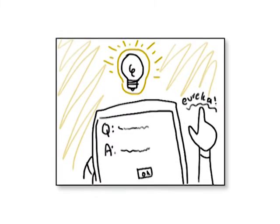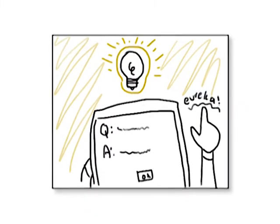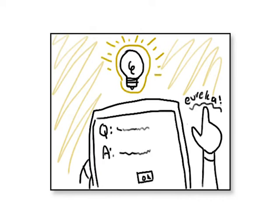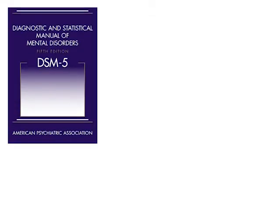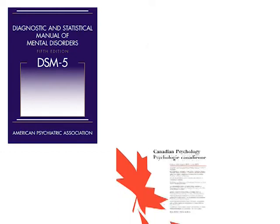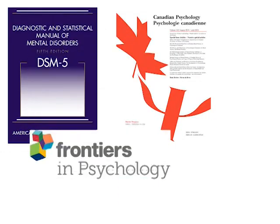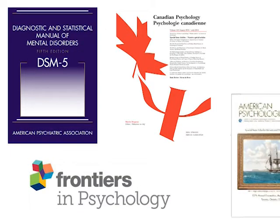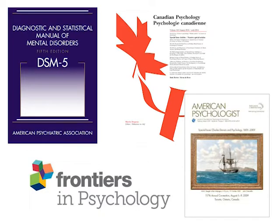Jenny assists in diagnosing and suggesting treatment through utilizing her powerful capability to make use of big data. Jenny's corpus will include the DSM-5 manual and major psychology journals such as the Canadian Psychologist, Frontiers in Psychology, and the American Psychologist, which contain thousands of articles Jenny can use to weigh probabilities for a diagnosis.